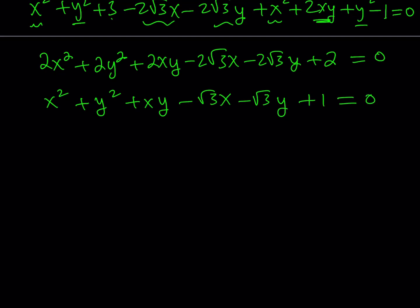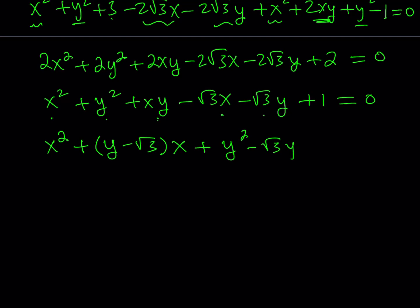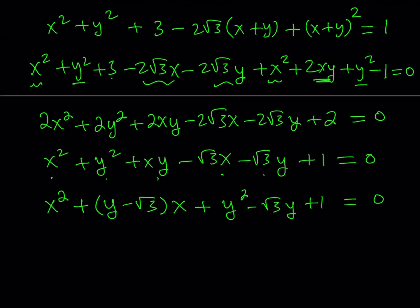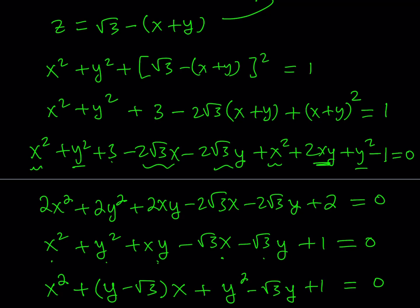Now I'd like to write this as a quadratic equation. I'll isolate the x squared term and group the terms containing x together, writing them as (y minus root 3) times x. The remaining terms are y squared minus root 3 y plus 1, equal to 0. That's a quadratic in x. It doesn't matter that we chose x — because of the symmetry of the system, we could have done this for any variable.